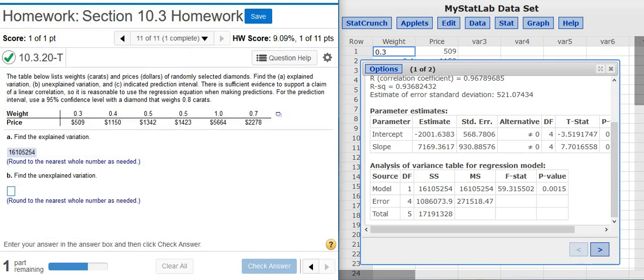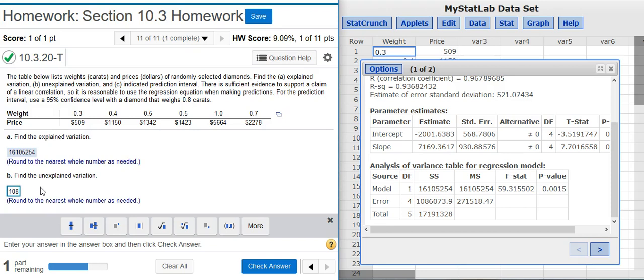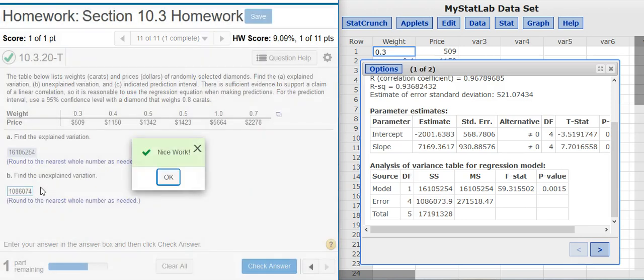Now, part B asks us to find the unexplained variation, which is the sum of the squares for the error. The error is what we can't explain. We don't understand why the model is so different from reality. Why do we observe something in reality that is not predicted by the model? There's a certain random nature to real life that we can't explain with our model. And so, the sum of the squares connected with the error is the unexplained variation. Once again, we're asked to round to the nearest whole number.